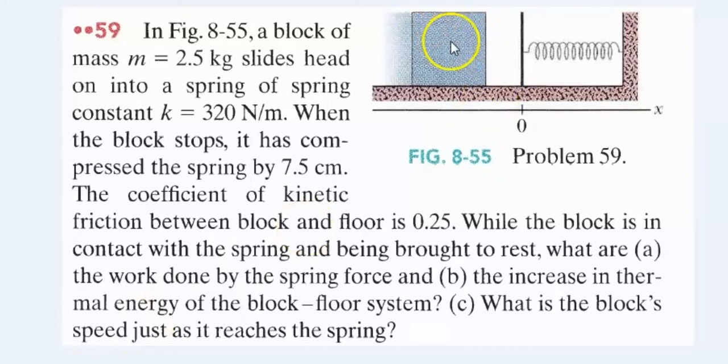In this figure we have a mass of two and a half kilograms sliding head-on into a spring. The k constant of the spring is 320 newtons per meter. It's going to compress the spring from this location, compress it by seven and a half centimeters.